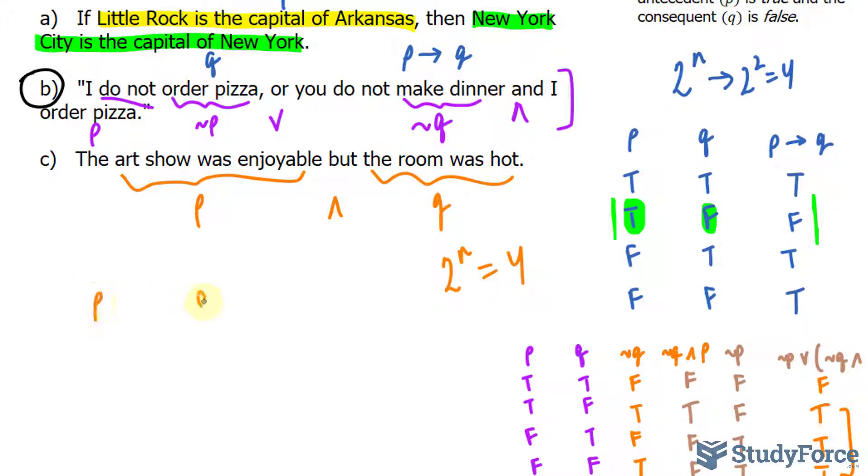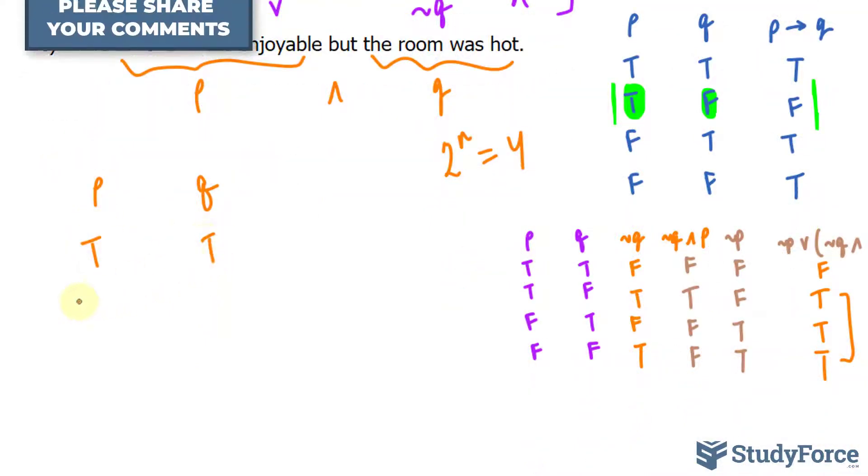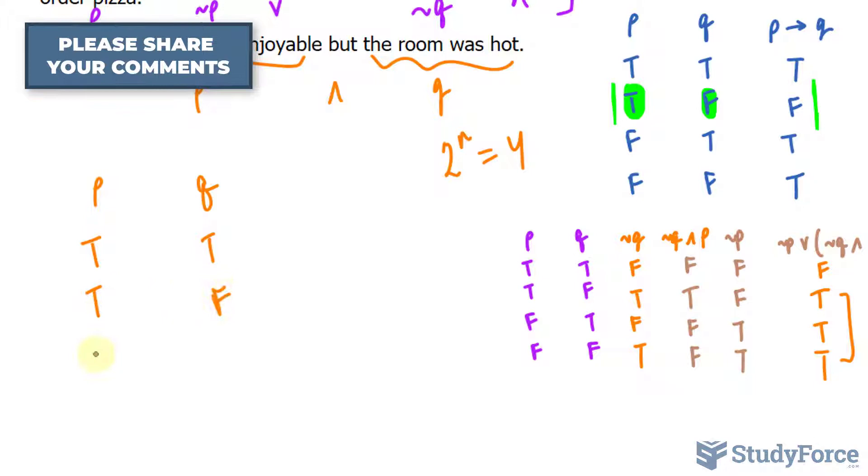I'll write down P and Q, they get their own column, and just like before, one of the possibilities is true, true, another is true, false, false, true, and both false.